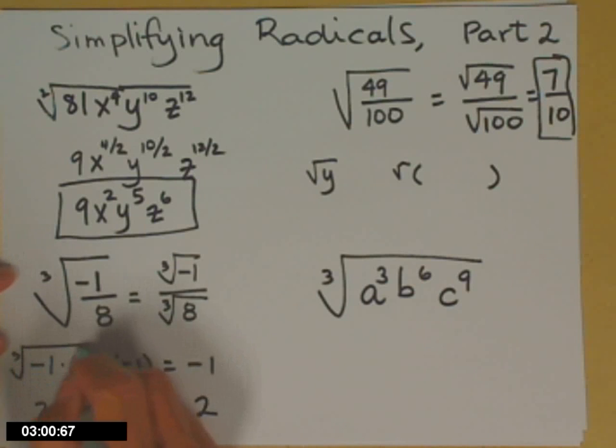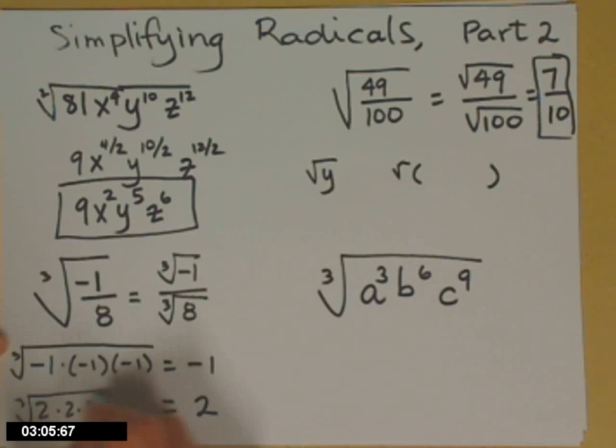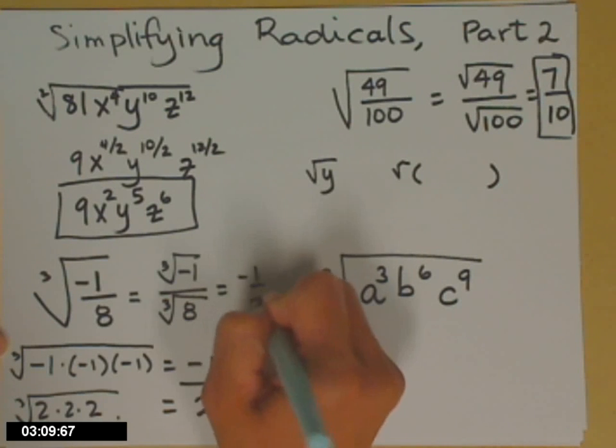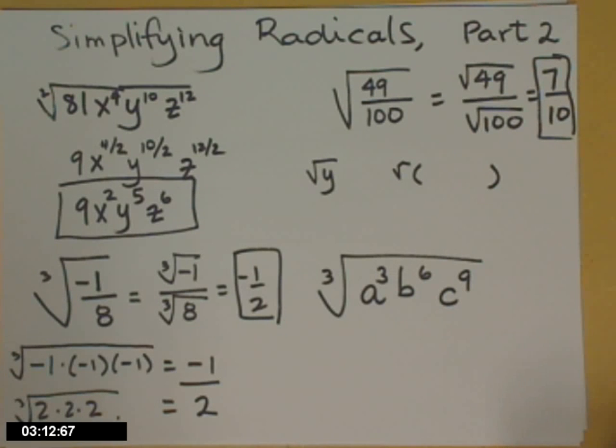So let's go ahead and put that radical. So the cubed root of negative one times negative one times negative one, cubed root of eight, negative one-half.